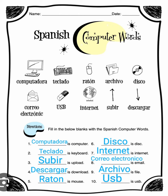Number four: descargar is download. Number five: ratón is mouse. Number six: disco is disc. Number seven: internet is internet.